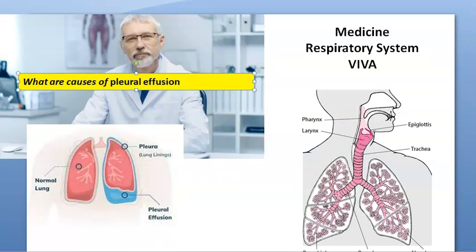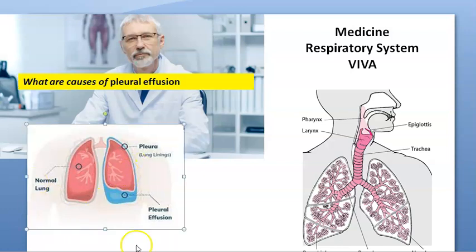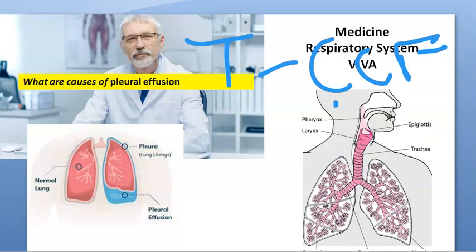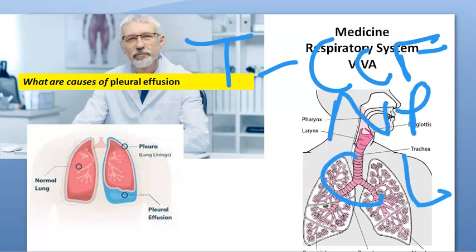What are the causes of pleural effusion? Sir, the causes of pleural effusion — if it is transudate, it can be because of congestive cardiac failure, cirrhosis of liver, nephrotic syndrome. So cardiac failure, cirrhosis of liver, and nephrotic syndrome — we can remember.